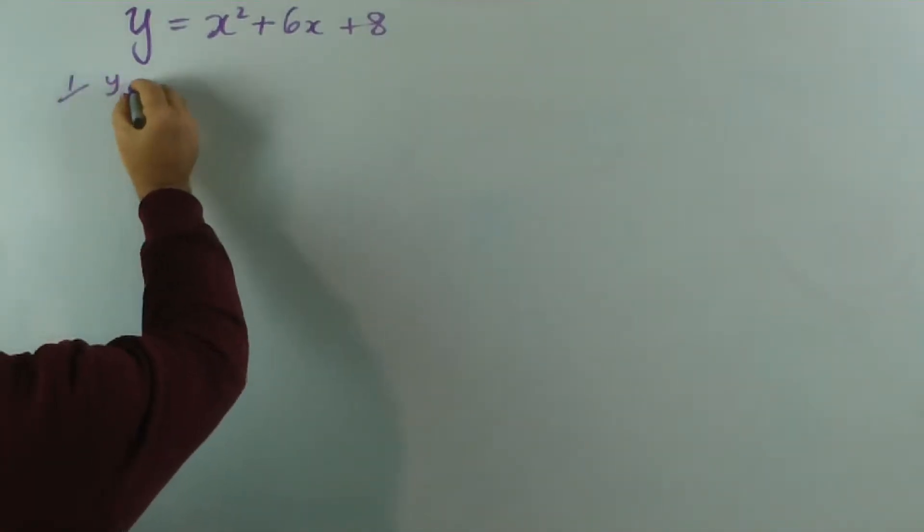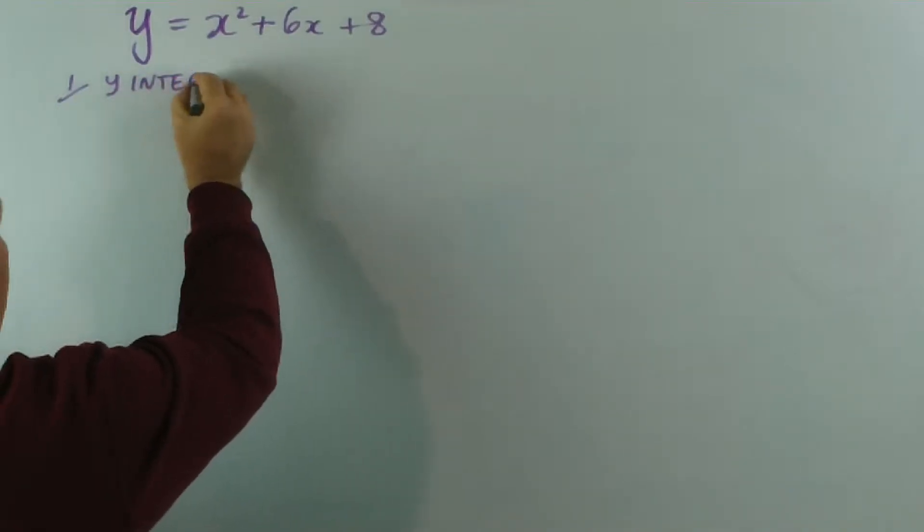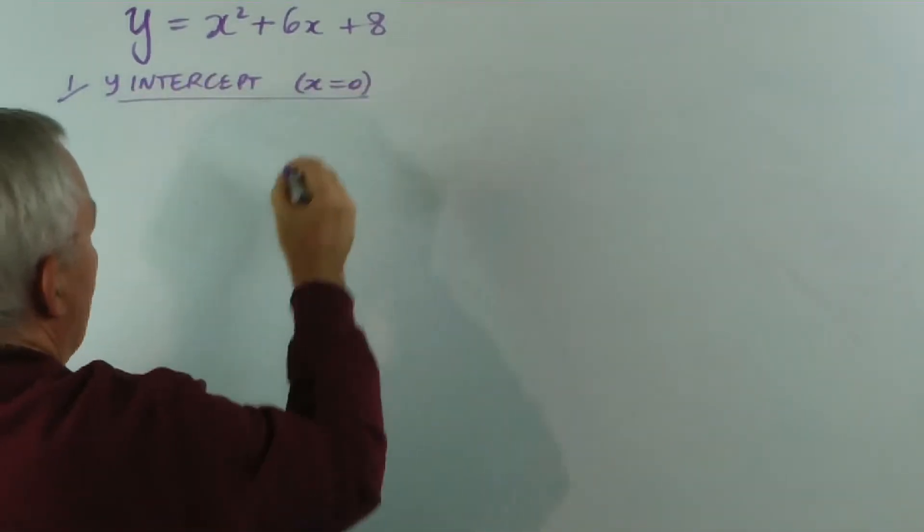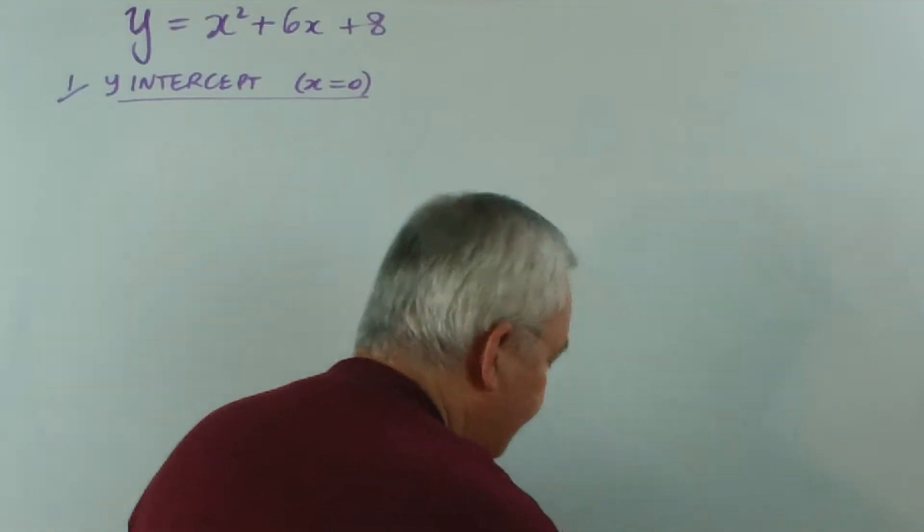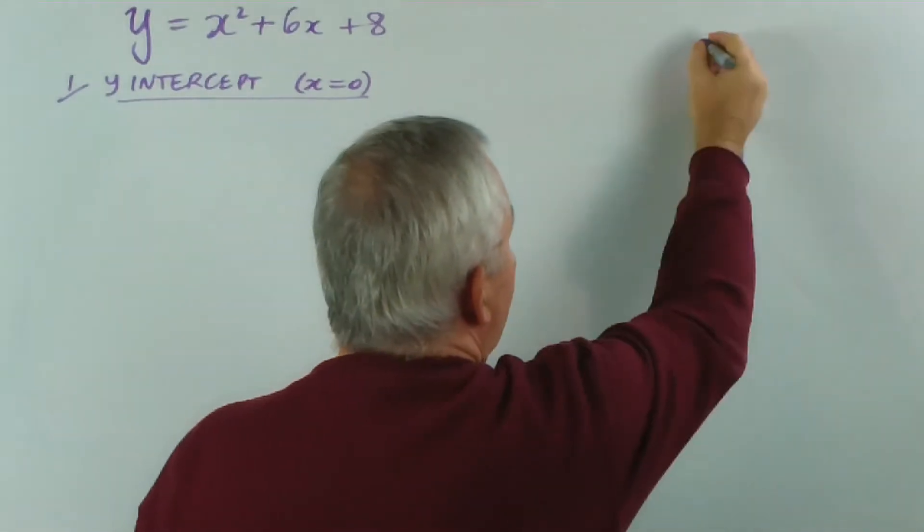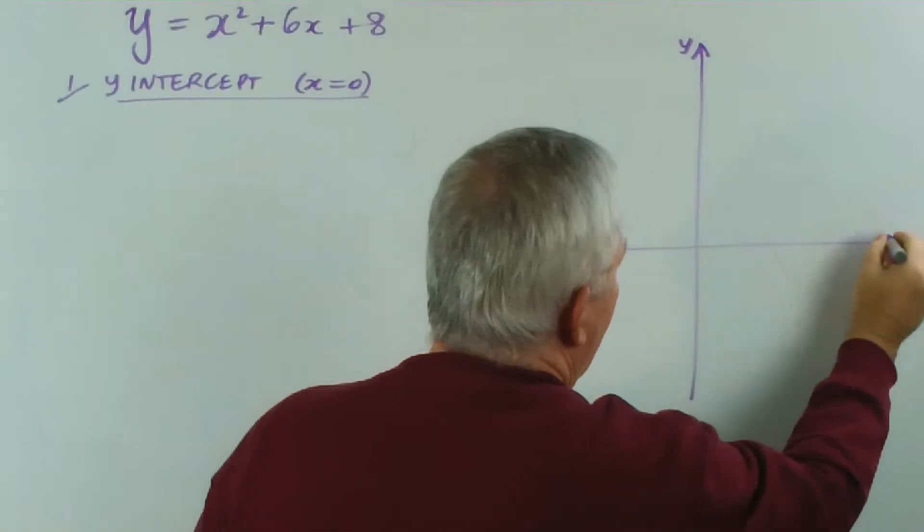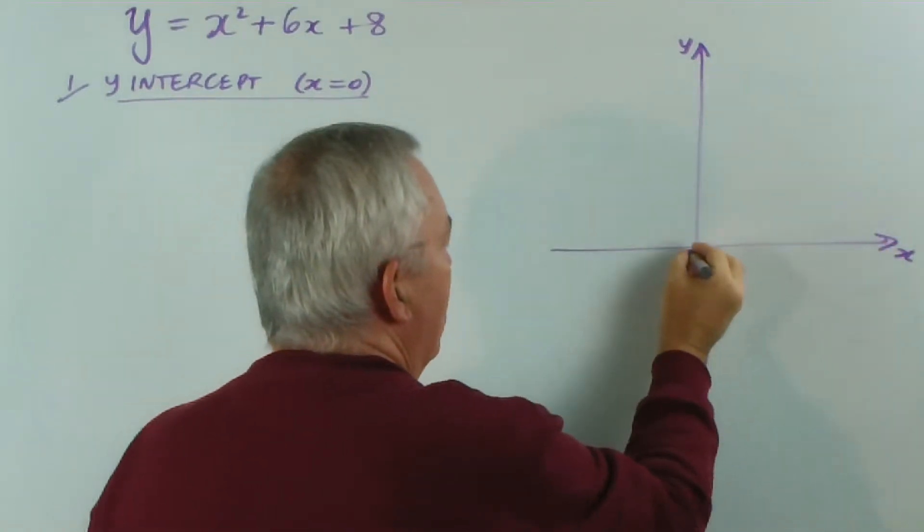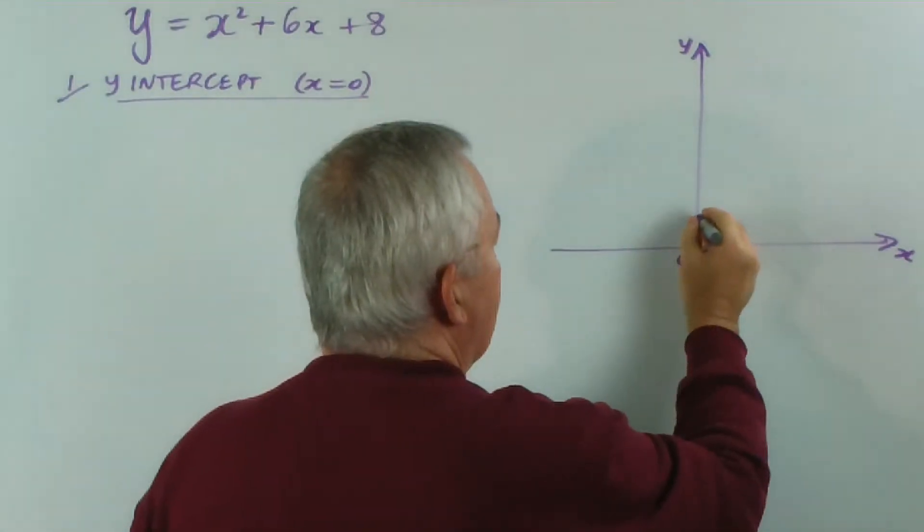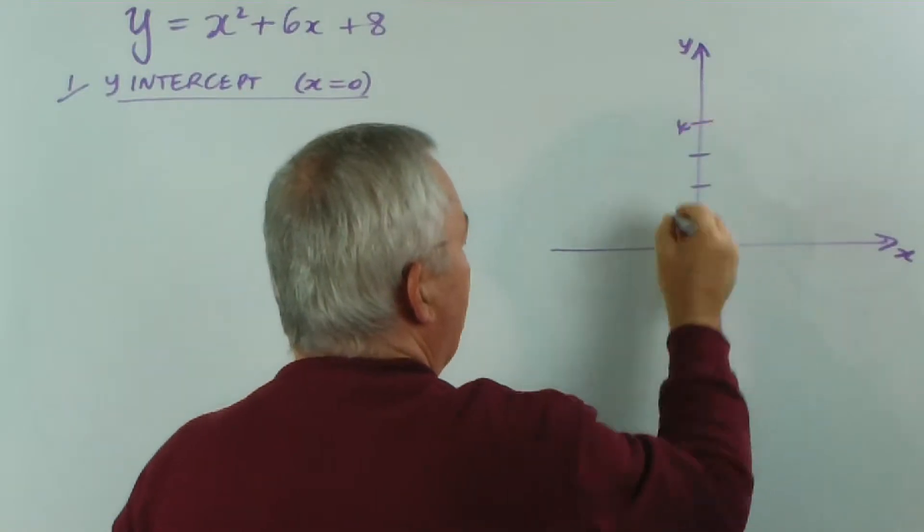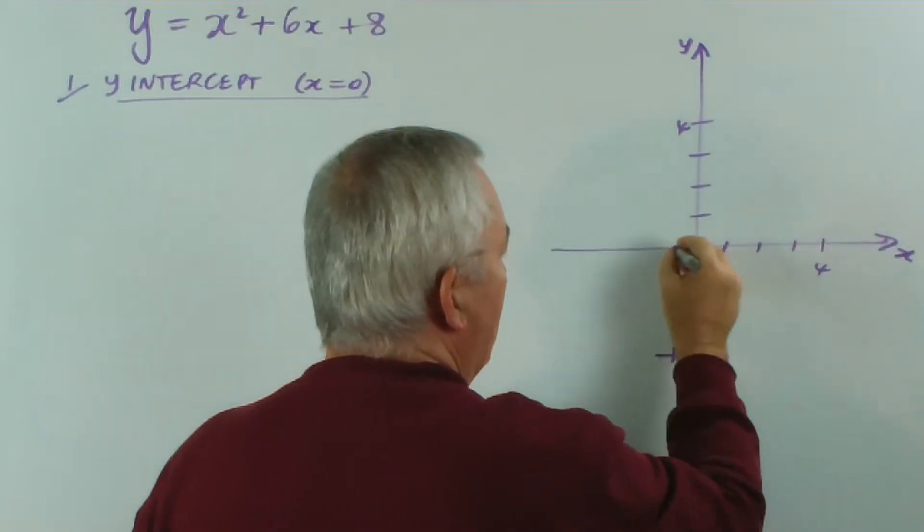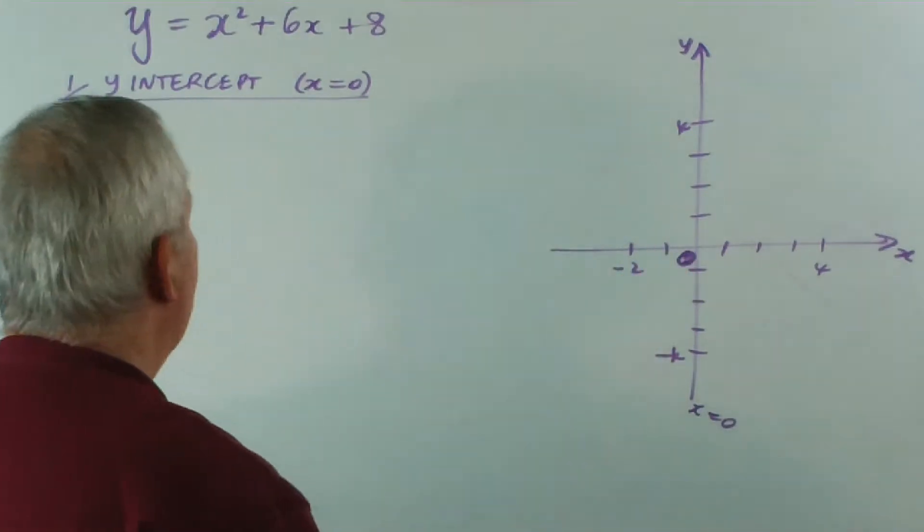The first thing is we try to find the y-intercept. And to do that, we substitute x equals zero because on our graph—actually, I'll draw the axes in purple as well—on our graph, the y-axis has the equation x equals zero. I'll just place some marks on here. We'll come back and visit this.